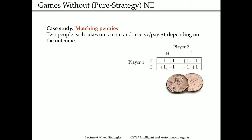We can easily draw a payoff matrix for this game. We have a two-by-two matrix where the columns indicate the options of player two and the rows indicate the options of player one. Whenever there is a match — say head and head — player two wins one dollar and player one loses a dollar. If there is a mismatch — head and tail — player one wins one dollar and player two loses one dollar. In the literature, we call this a zero-sum game because in every outcome of the game, a win for one player is a loss for the other.